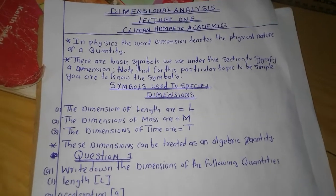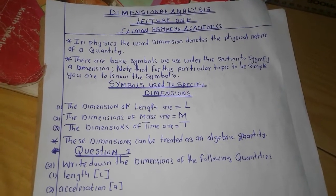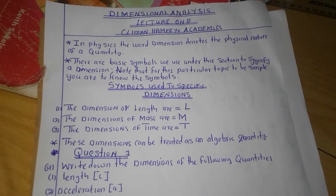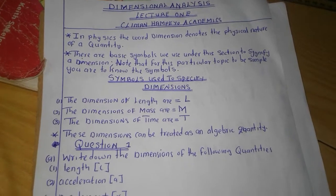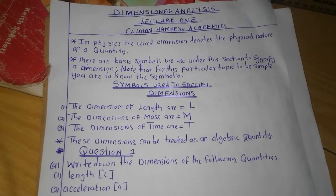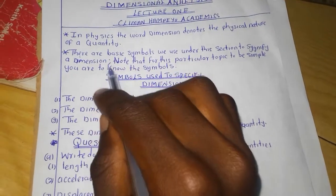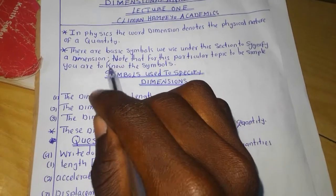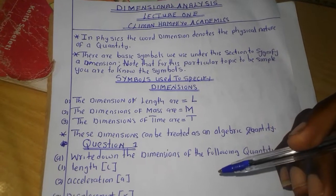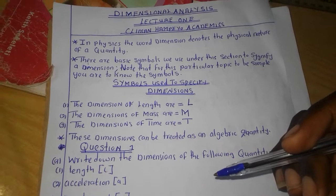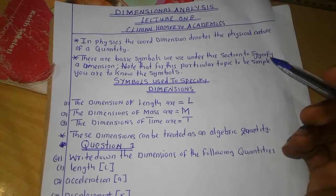For those of you joining us for the first time, I hope you'll be able to subscribe and share with others so that they may also learn. Now in physics, the word dimension simply denotes the physical nature of a quantity. There are basic symbols we use under this section to simply signify what a dimension is.